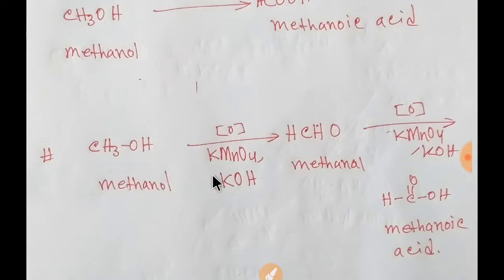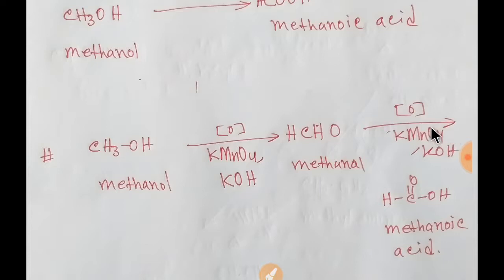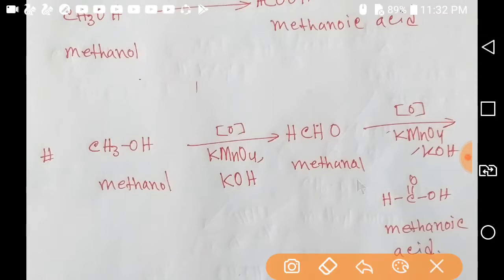If you oxidize methanol with potassium permanganate in basic solution, you will first get methanal. Then this methanal will be further oxidized by potassium permanganate, and we will get methanoic acid. Methanal is an aldehyde and methanoic acid is a carboxylic acid.